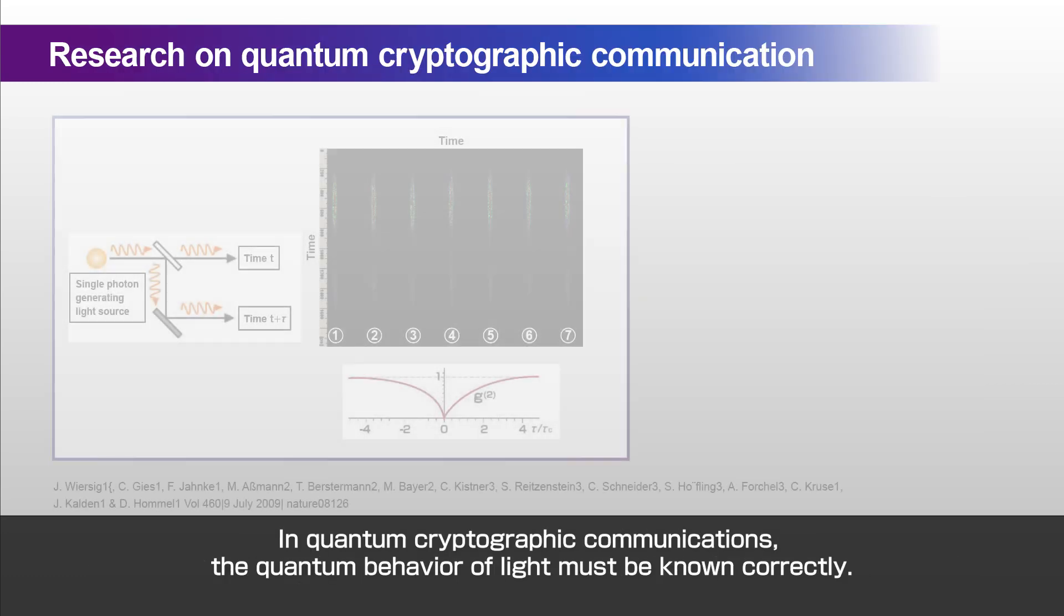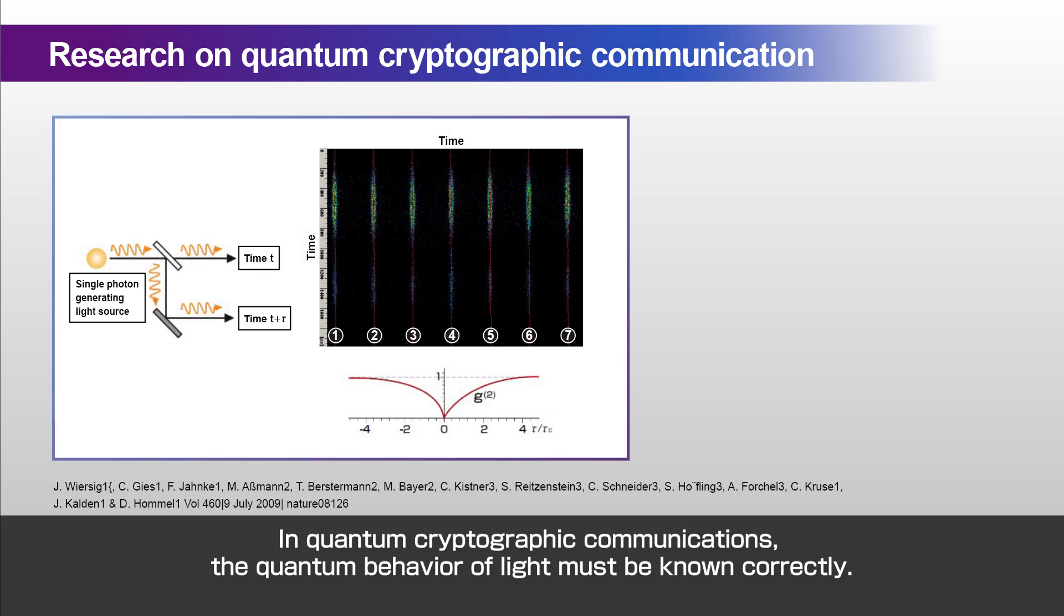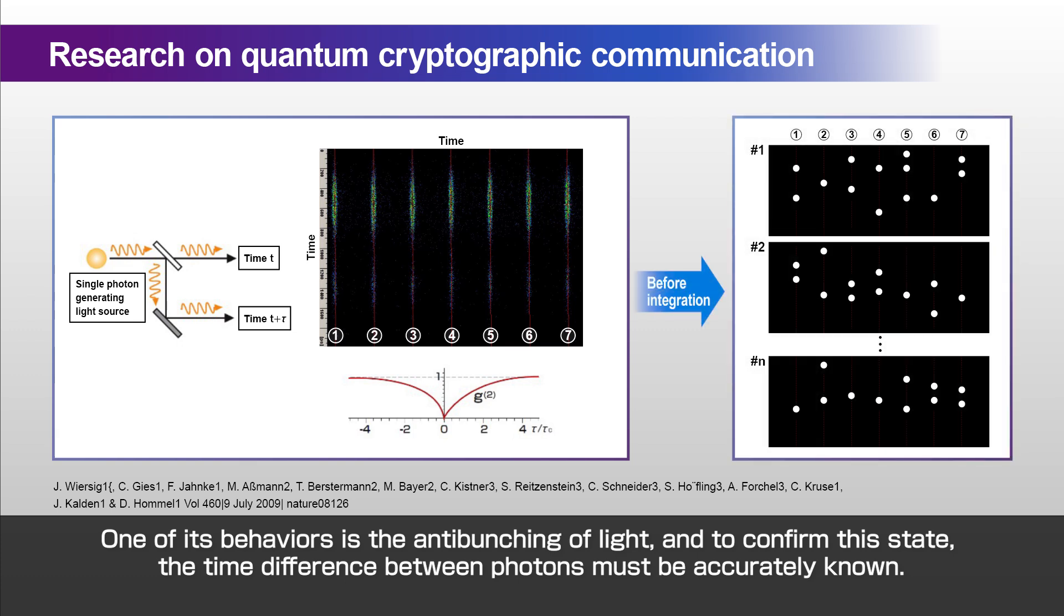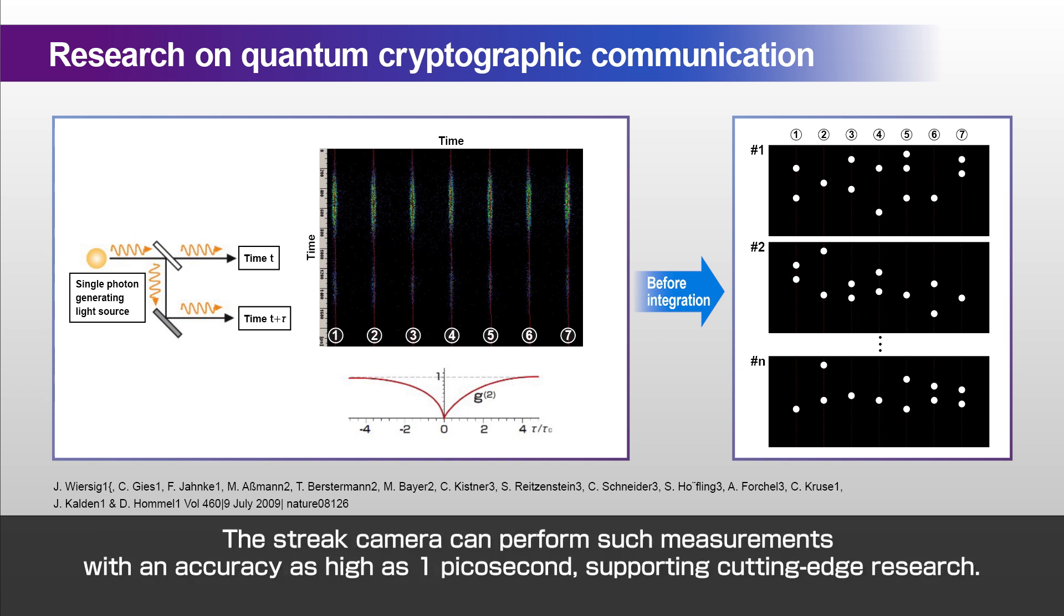In quantum cryptographic communications, the quantum behavior of light must be known correctly. One of its behaviors is the anti-bunching of light, and to confirm this state, the time difference between photons must be accurately known. The streak camera can perform such measurements with an accuracy as high as 1 picosecond, supporting cutting-edge research.